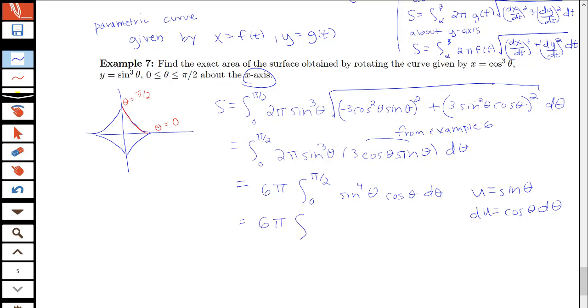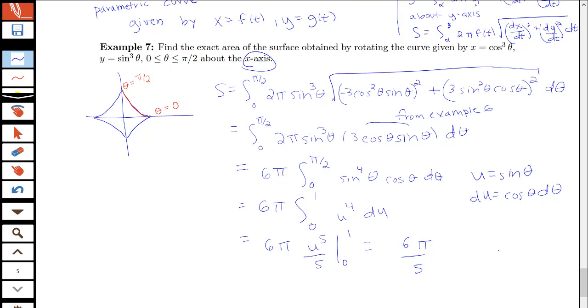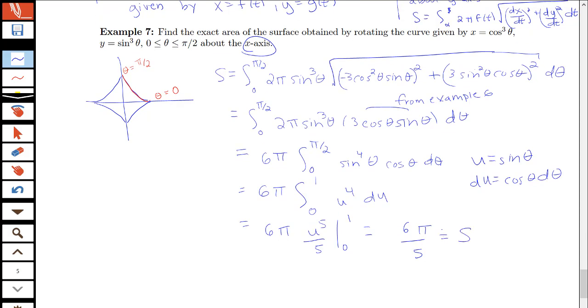Now I'm going to want u limits here. So notice that when θ is 0, u would be sine of 0 or 0. When θ is π/2, I'll have sine of π/2 or 1. So this will be u to the fourth times du. So this will be 6π times u to the fifth over 5, evaluated from 0 to 1. So we'll end up with 6π/5 is the value of our surface area of this curve when we rotate about the x-axis.